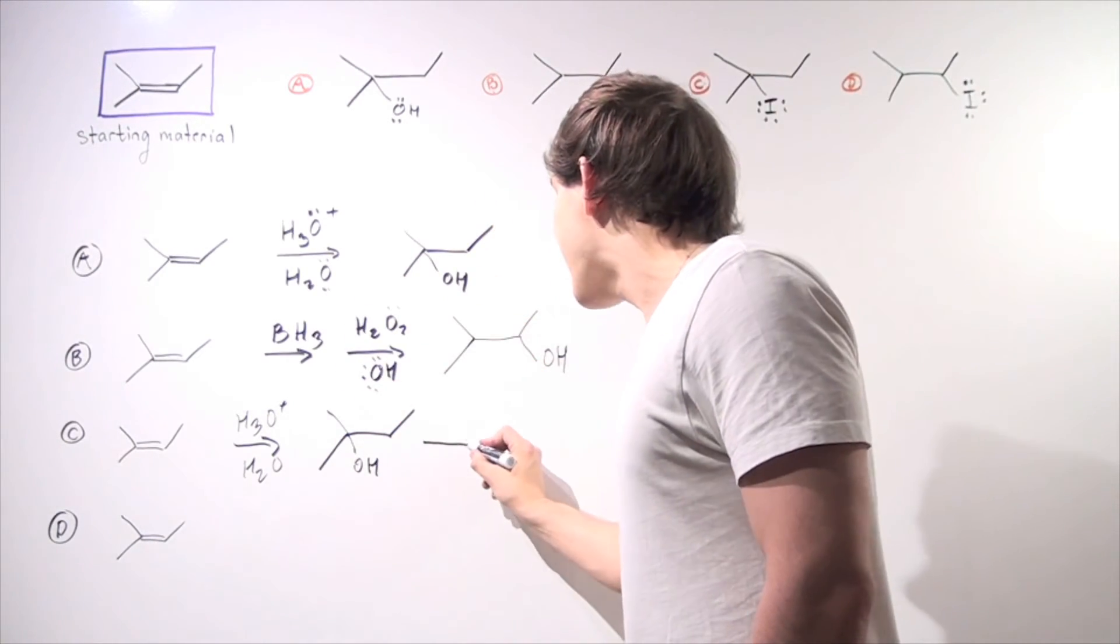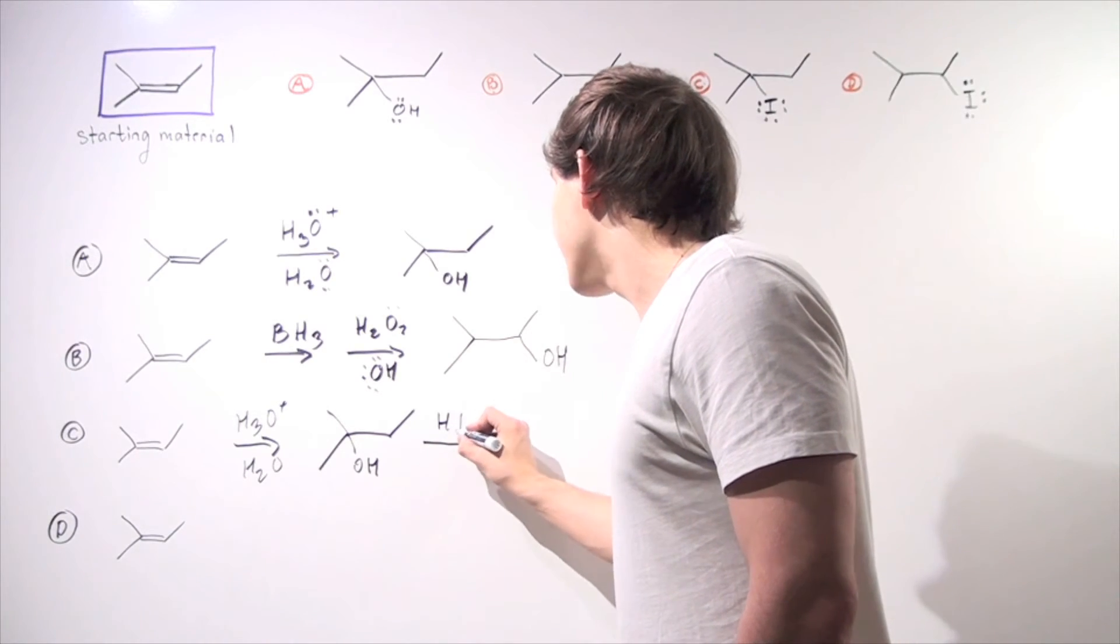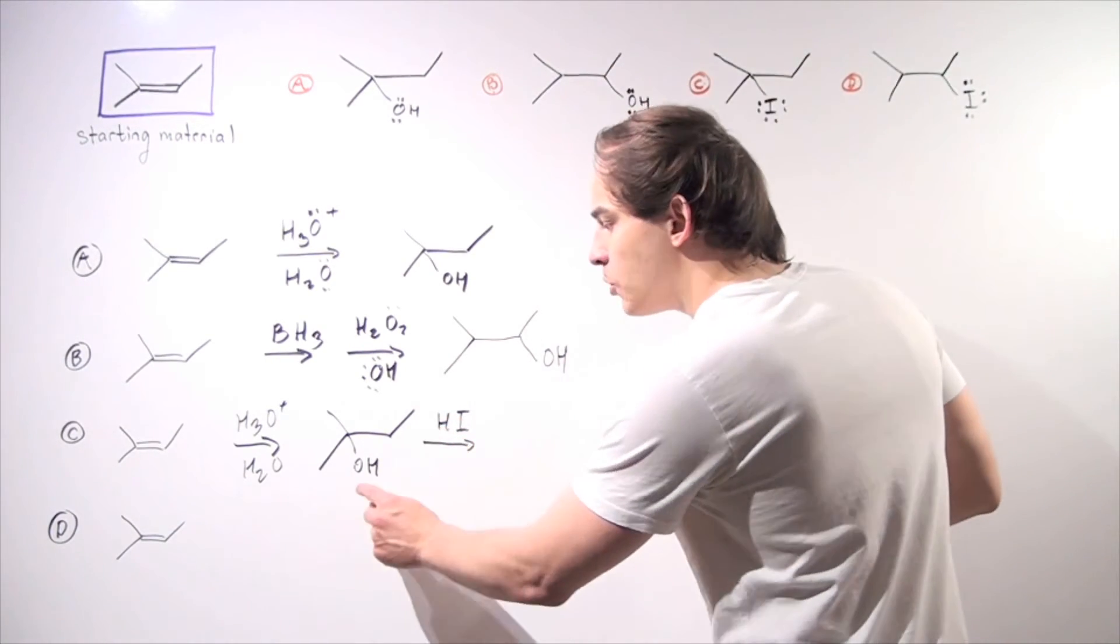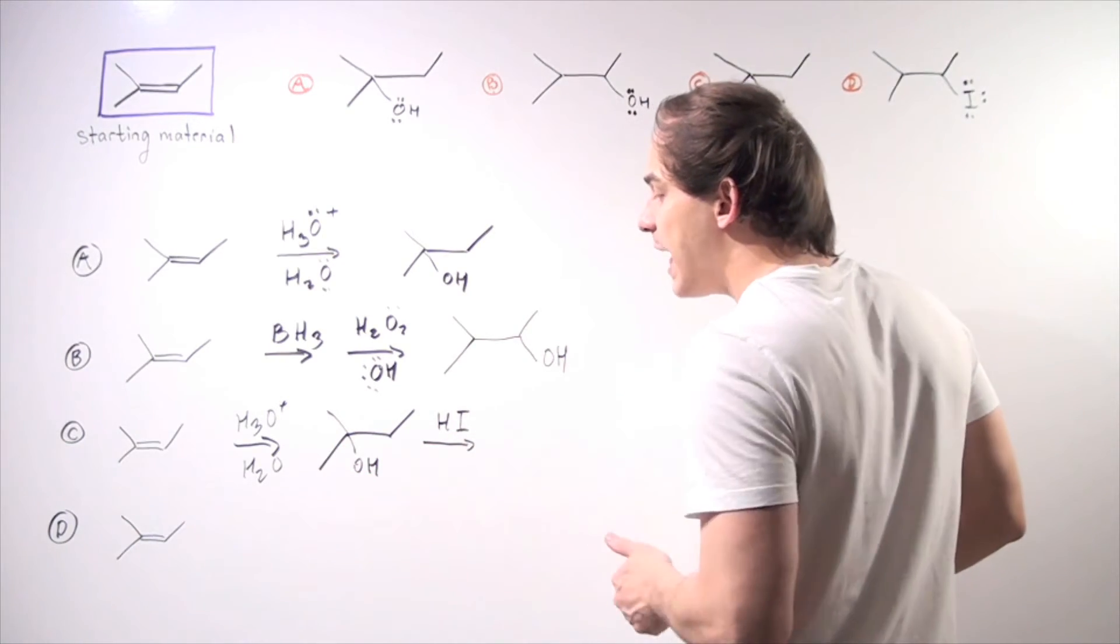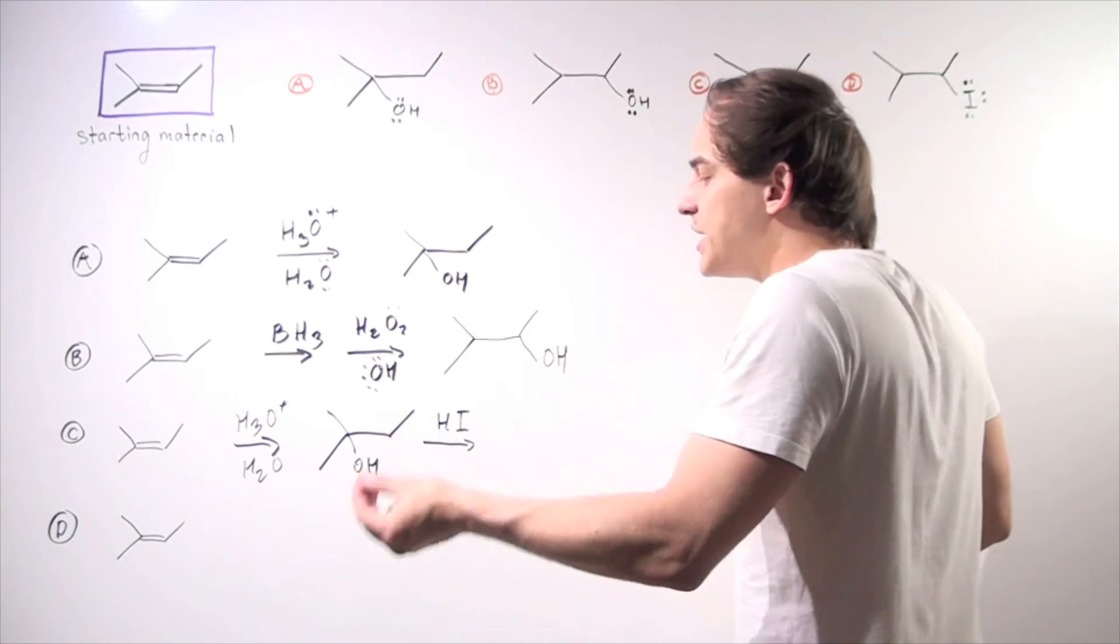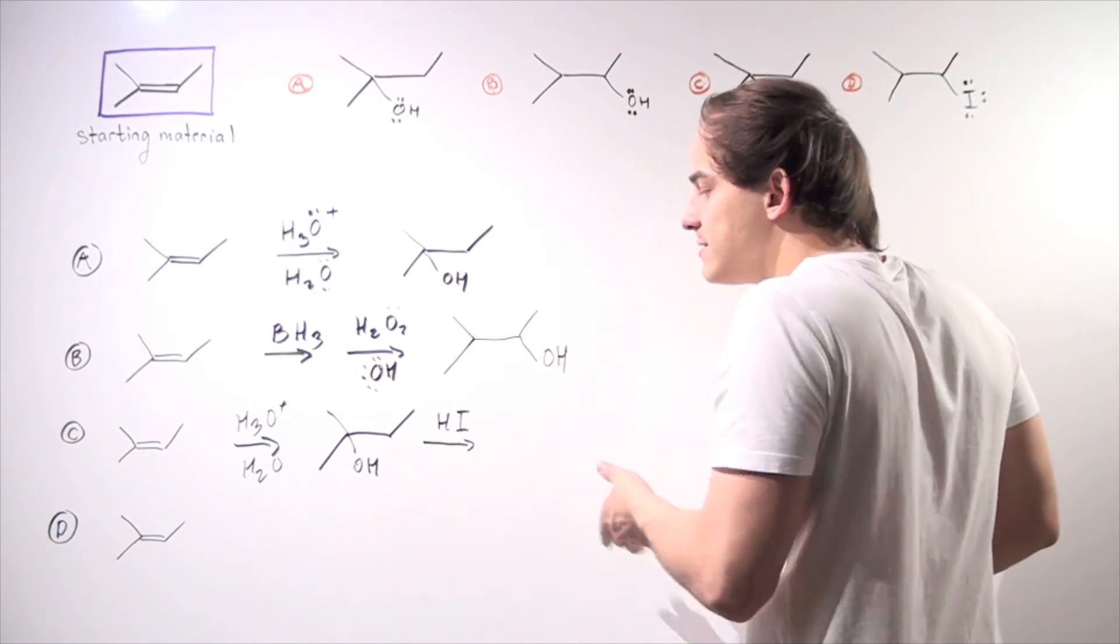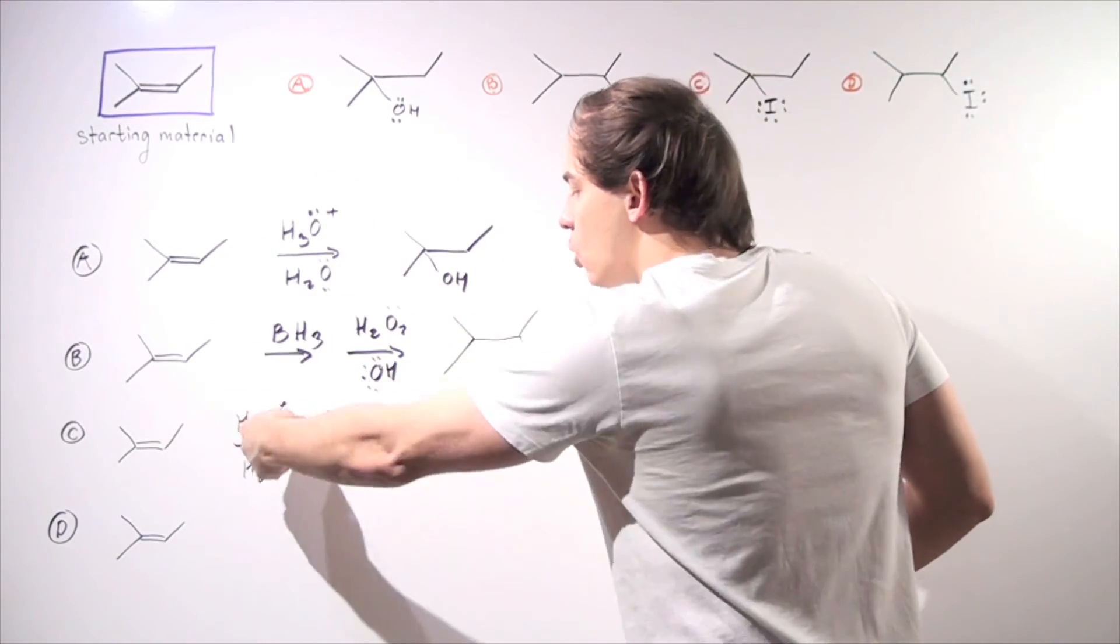And now, if we add HI acid, what happens is the H protonates the oxygen, making a better leaving group. And then, via an SN1 reaction, this is displaced and iodide attacks the carbocation.